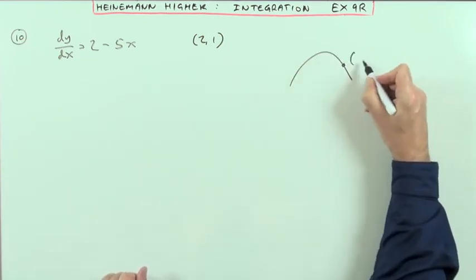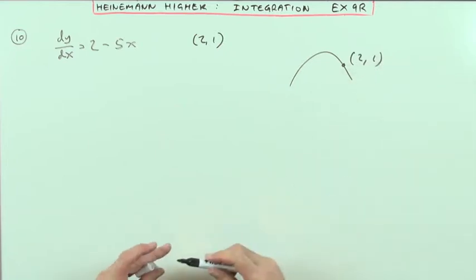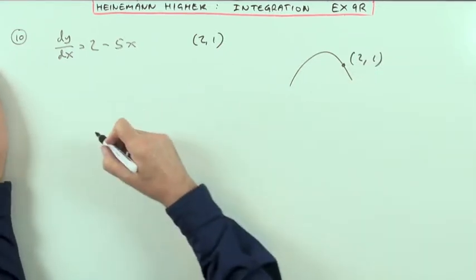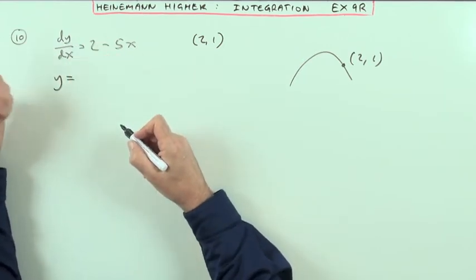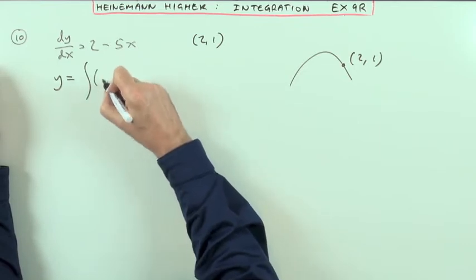It tells you it passes through the point (2, 1), so that lets you find the constant. How could I get back to y? It's been differentiated, so I need to anti-differentiate it. That would be the integral.